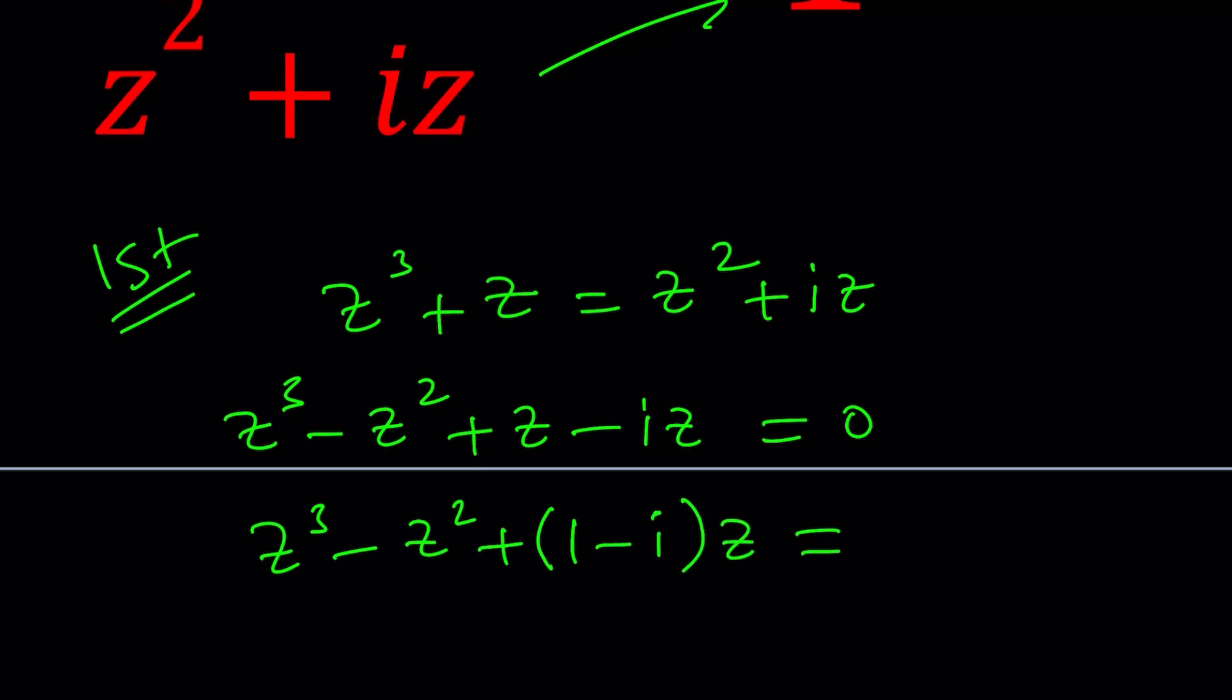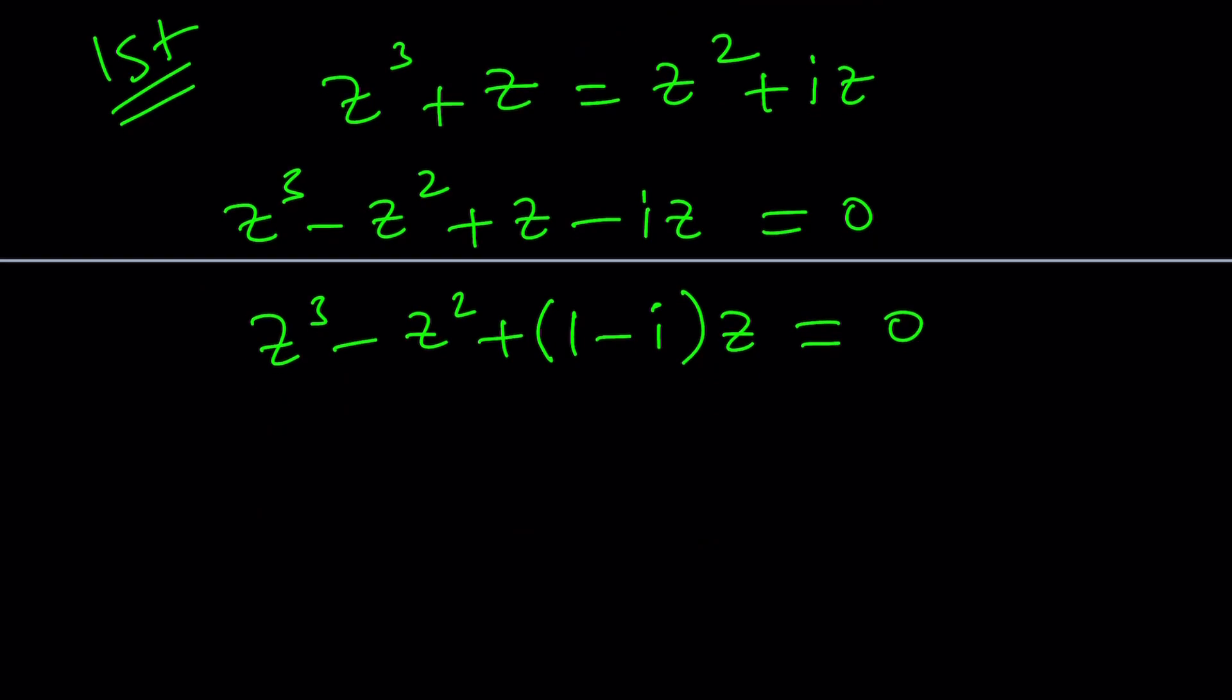And we can basically put these two together like coefficient of z is just going to be 1 minus i. And of course, this is a nice cubic because it's factorable easily, right? We can take out z. Let's go ahead and factor out a z here. That's going to give us z squared minus z plus 1 minus i. You know what that means? That means that one of the solutions is z equals 0.